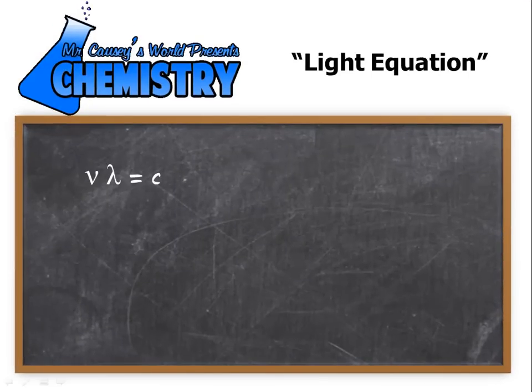The light equation is nu times lambda equals the speed of light. Now you need to remember that this symbol right here is nu and that stands for frequency and this symbol right here is lambda and that stands for the wavelength. And so those two multiplied together equals the speed of light. And the speed of light as we know at least for our purposes is fairly constant. So we can use this to find the frequency.